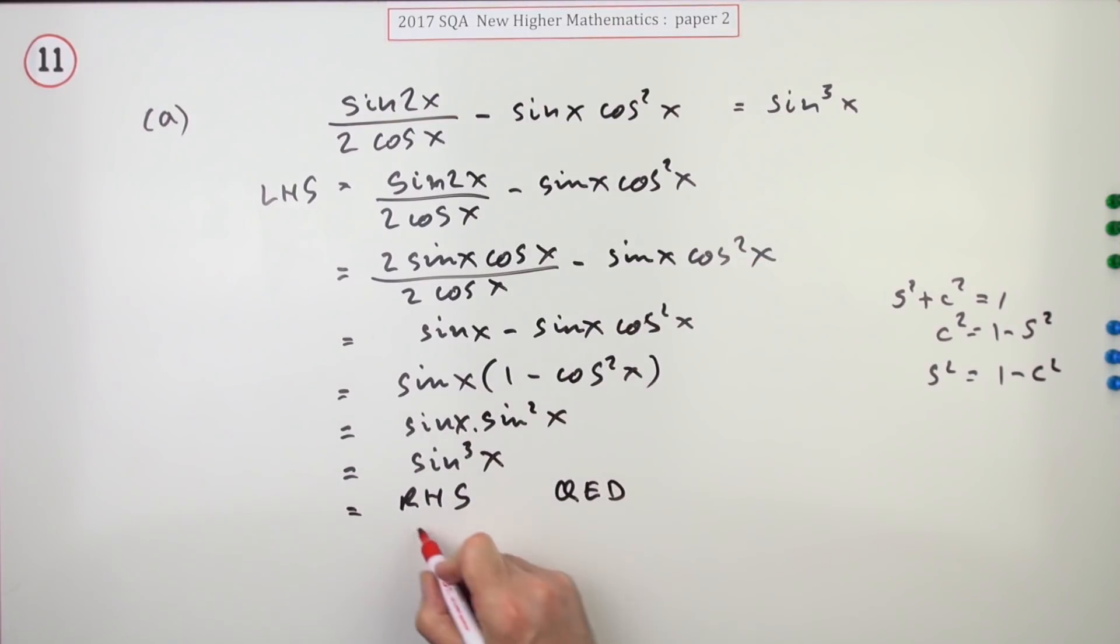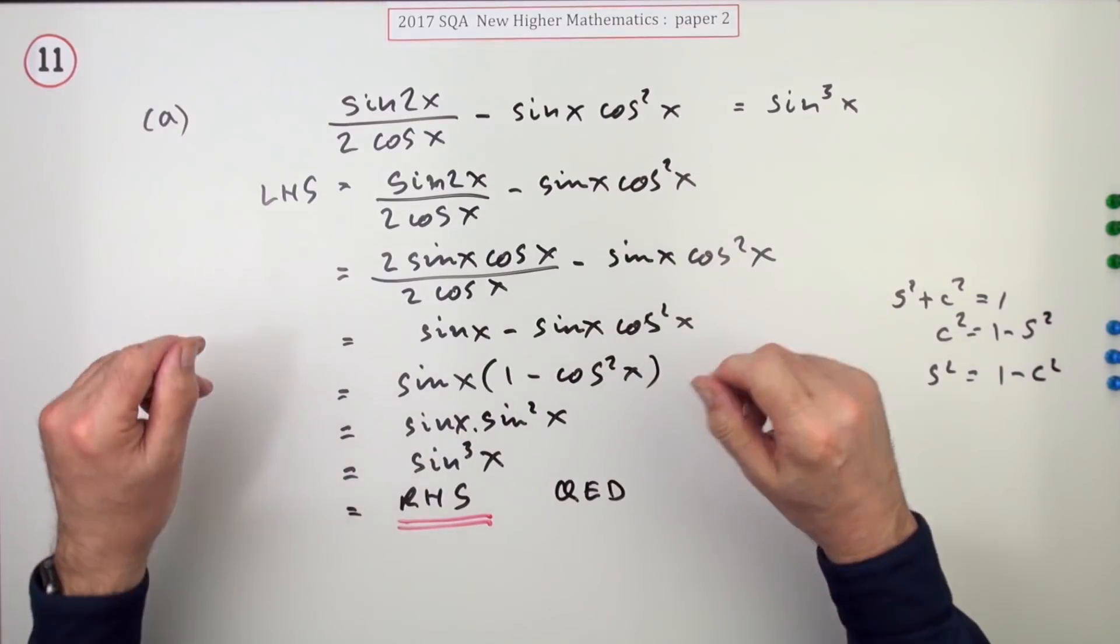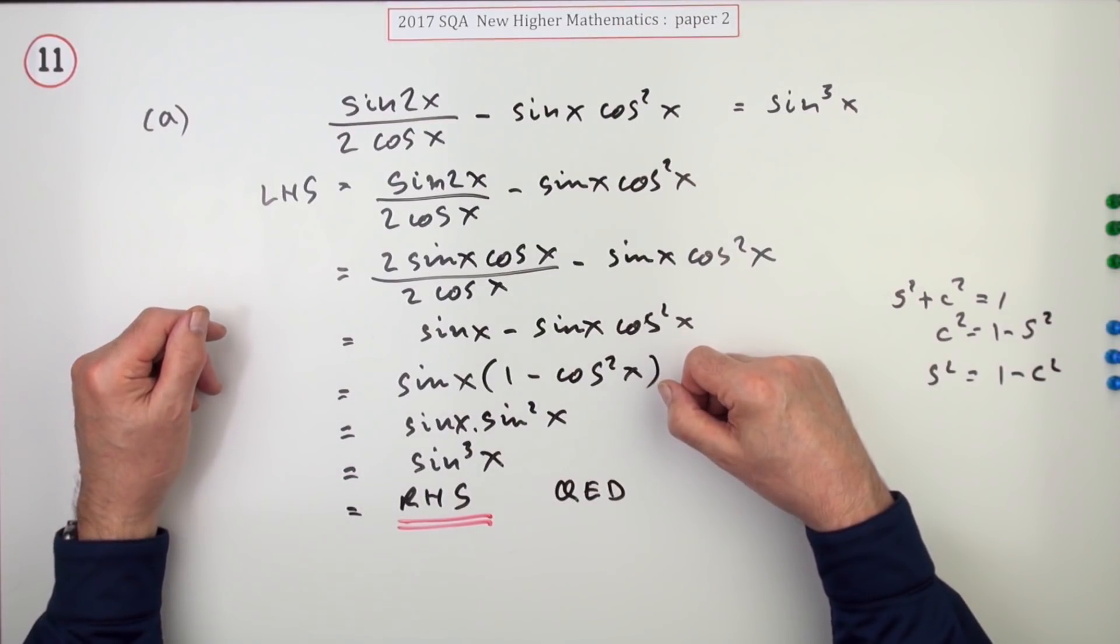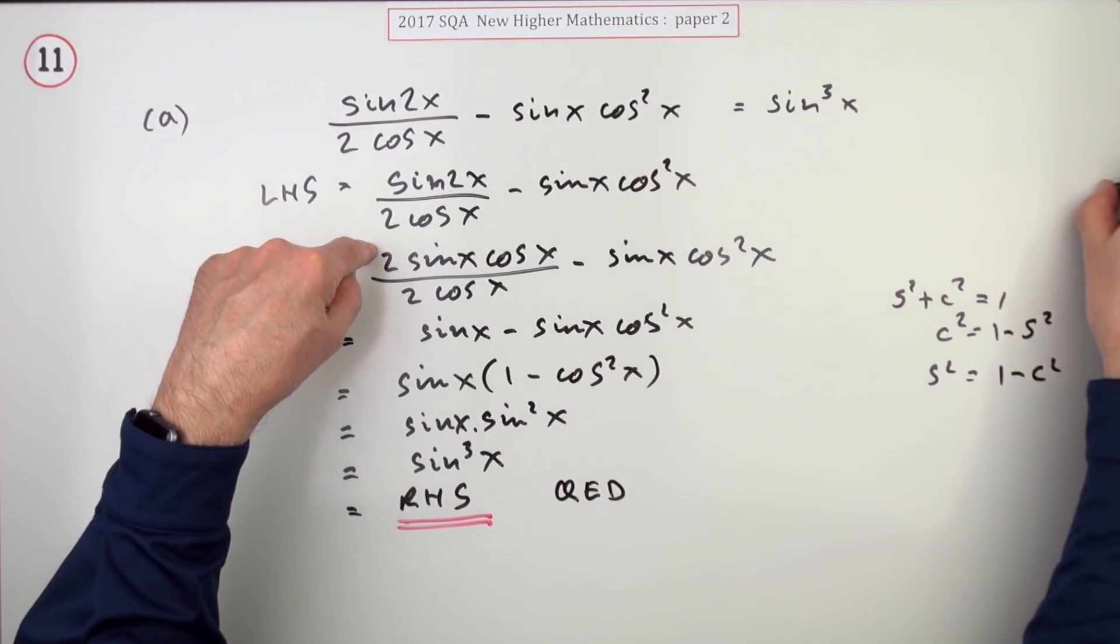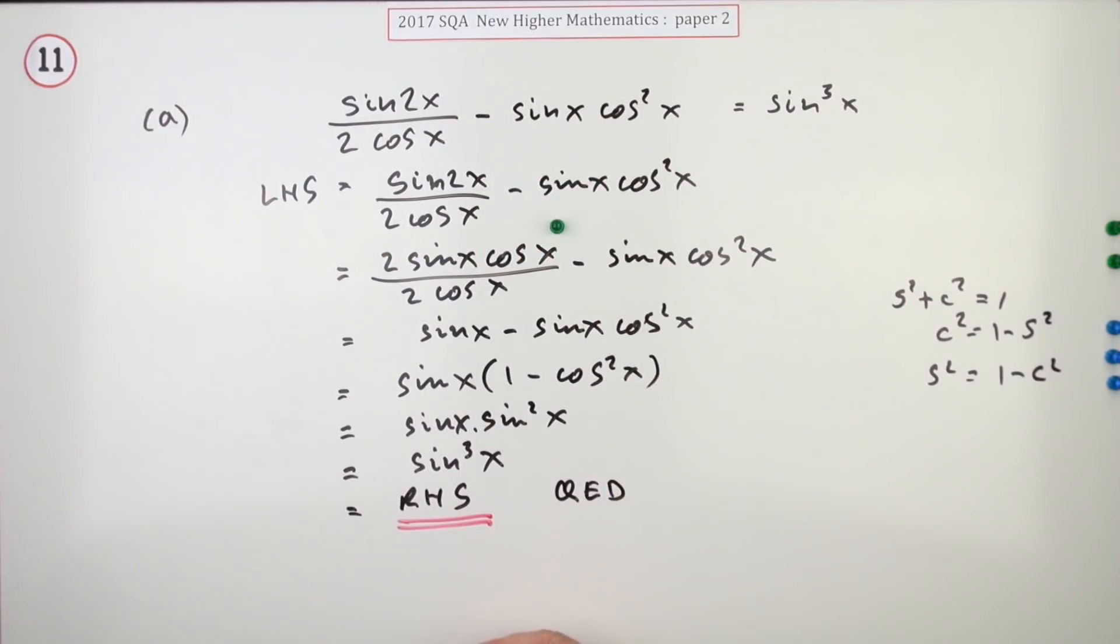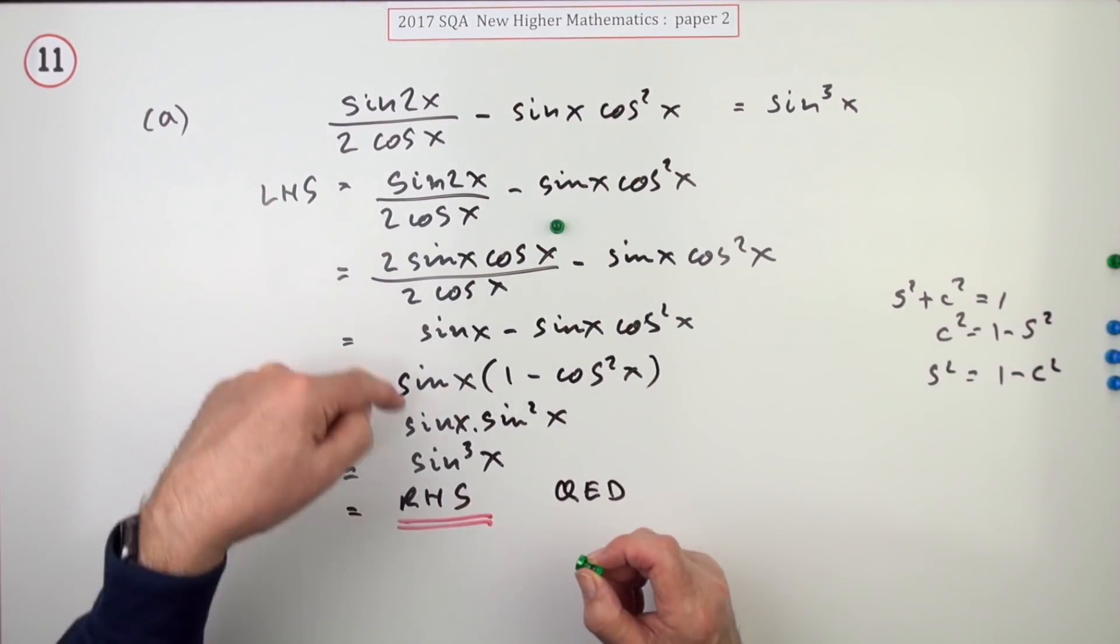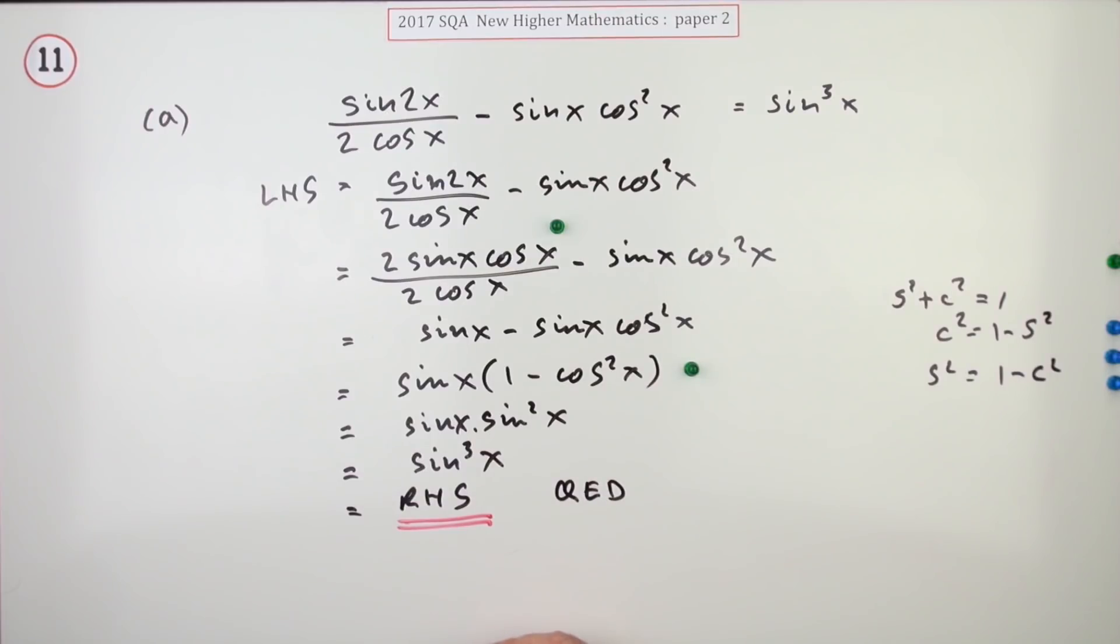Now I've just rushed through that without the marks. The first mark was for explicitly expanding sine 2x. The next part was for simplifying it and factorizing it, and the third part is for the final identity.